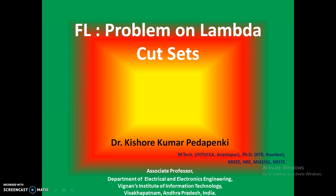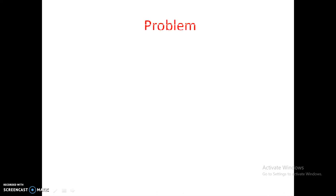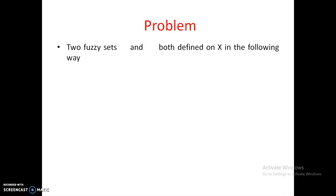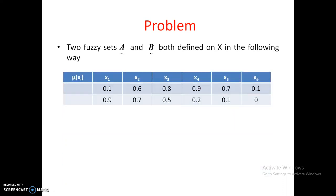This is the heading of this video. Let's go ahead with the problem. There are two fuzzy sets, both defined on capital X, in the following way. We can write this as μ_A(x) represented in membership form.